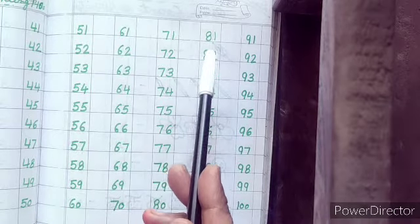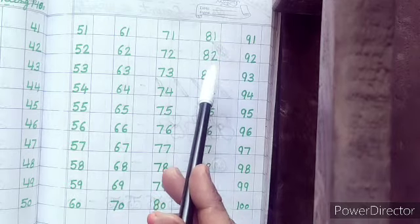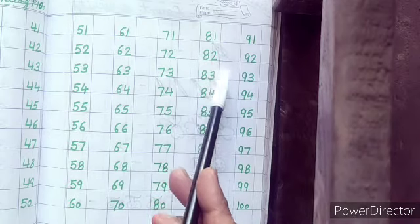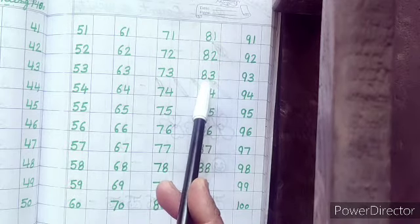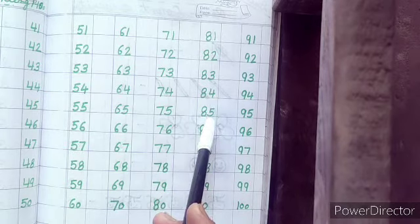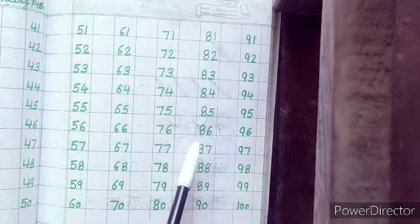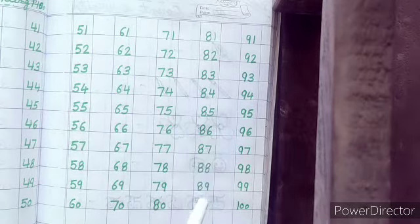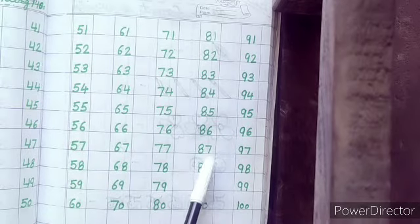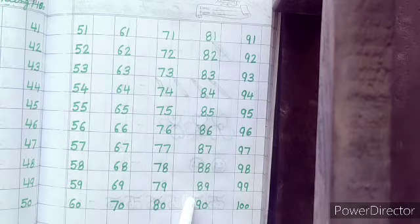Then after 81. Very good. 82. Then after 83, 84, 85, 86, 87, 88, 89, 90.